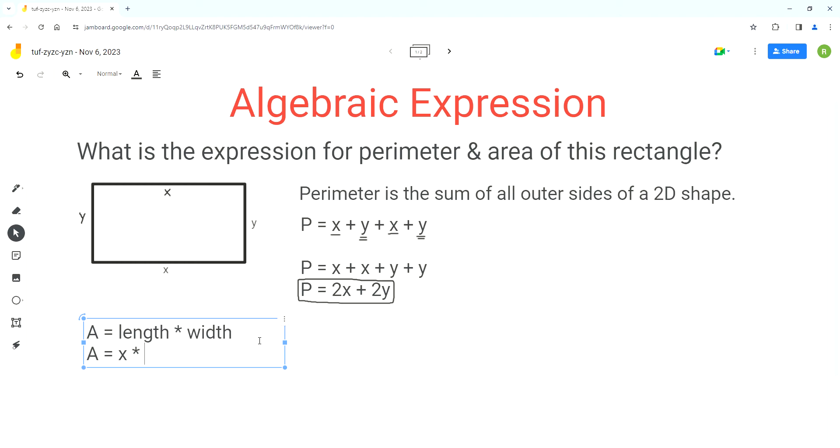This dimension is the length and that's the width. Now in algebra, when we multiply two variables, we write them next to each other. So the expression for area of this rectangle is xy. This should be the final answer for the area of this rectangle.